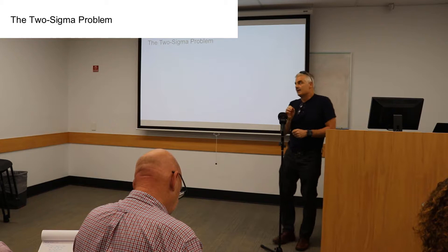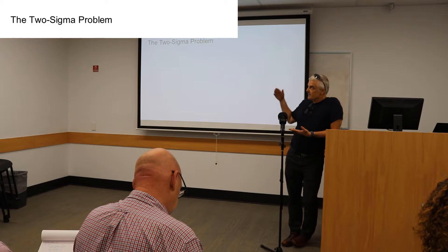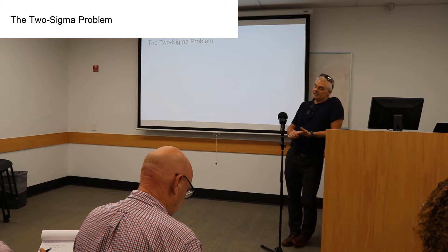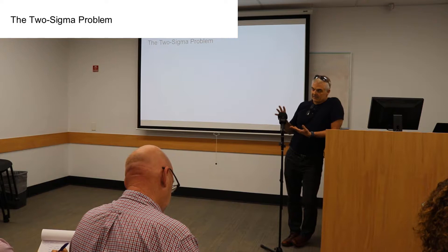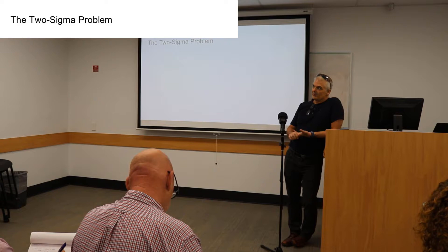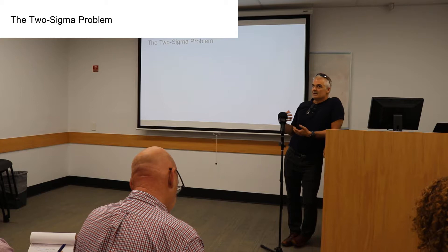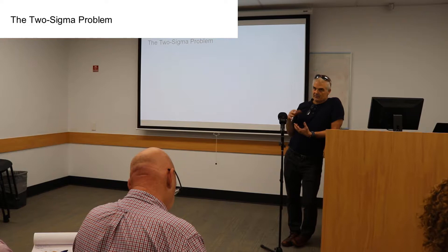His two sigma challenge was this: if we could find a method that the average teacher could learn and use, with the equivalent effect of two sigmas of one-to-one tutoring, that would be an educational innovation of the highest order. This has really captivated me, because I believe we've solved the problem — and that is when we marry flipped learning with mastery learning. In a flipped mastery classroom, you get the one-on-one tutoring effect while still doing mastery learning.